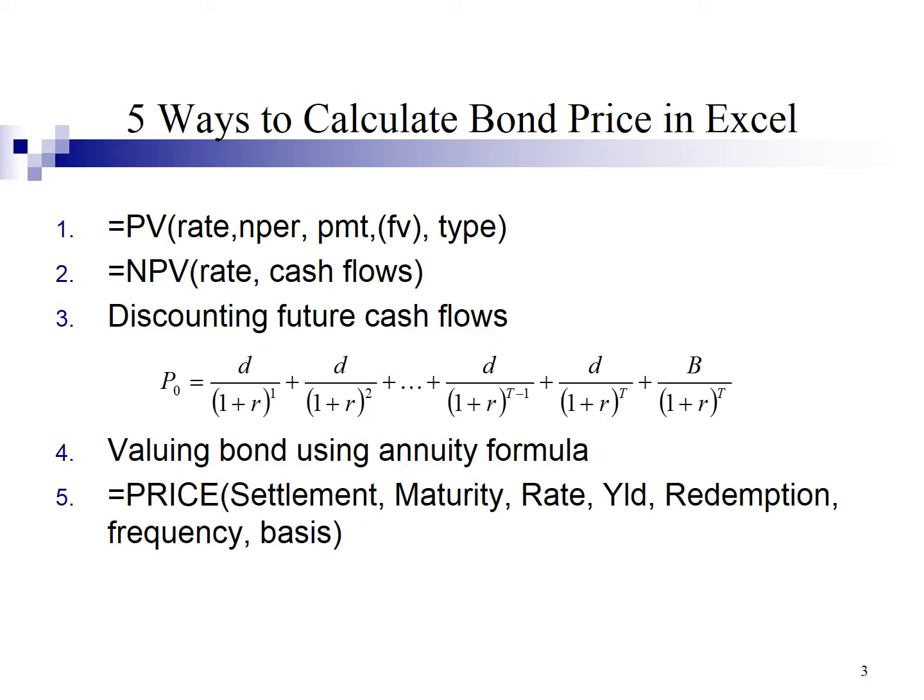In this slide, I have listed down five methods to calculate the bond price using Excel. The price of a bond at any given time represents the present value of future interest payments plus the present value of the par value of the bond at maturity. There are three key inputs to the valuation process: cash flow, timing, and discount rate.